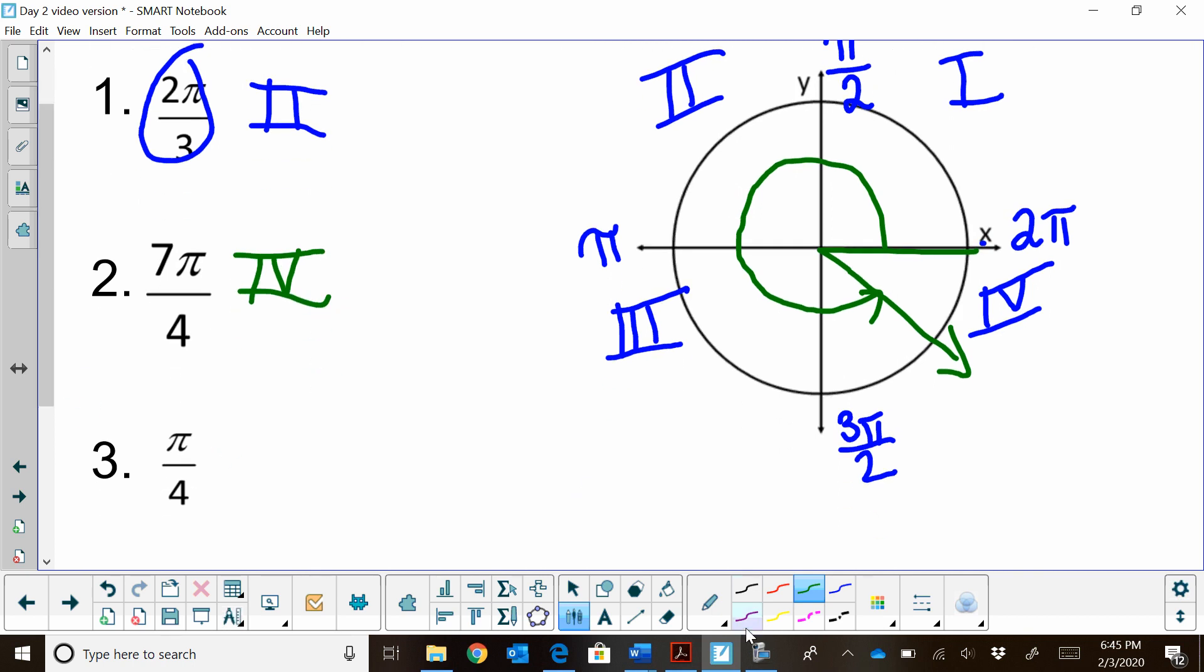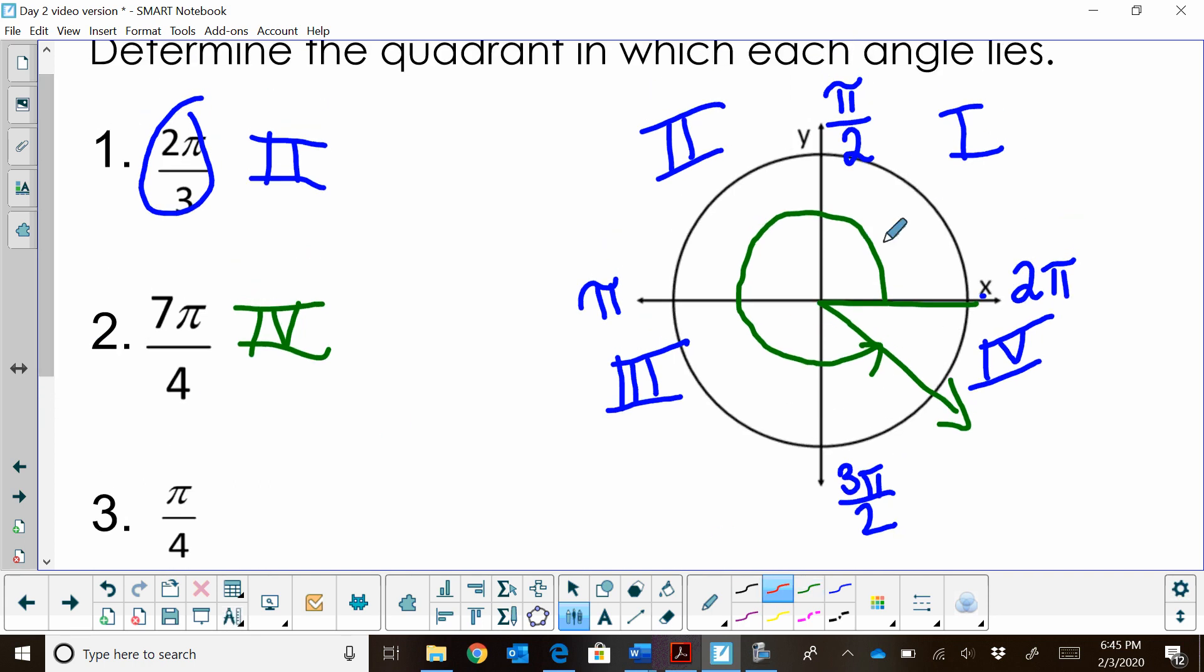Now let's look at pi fourths. Pi fourths is a small angle. That's going to end up just being half of pi halves. So that's actually going to be right here. I've just drawn that in red. So it's going to be in quadrant one.